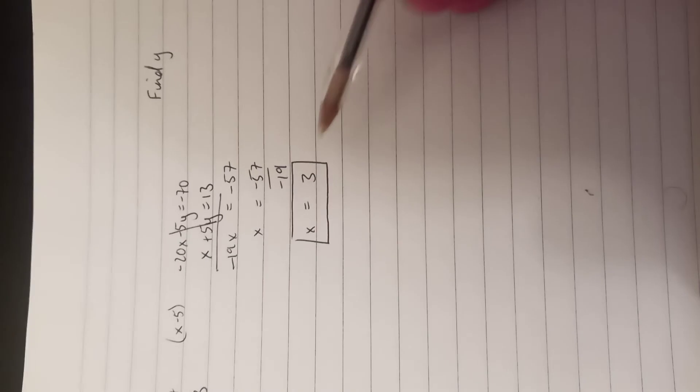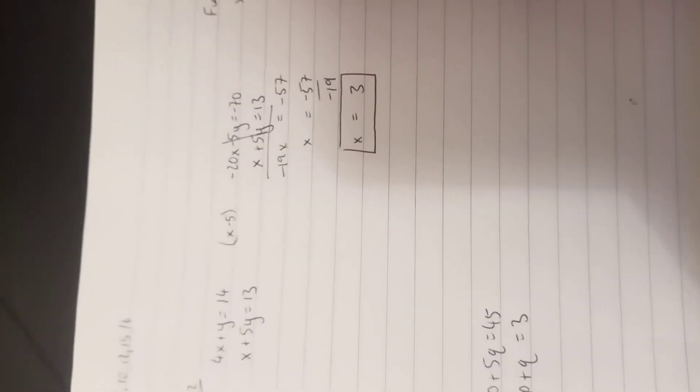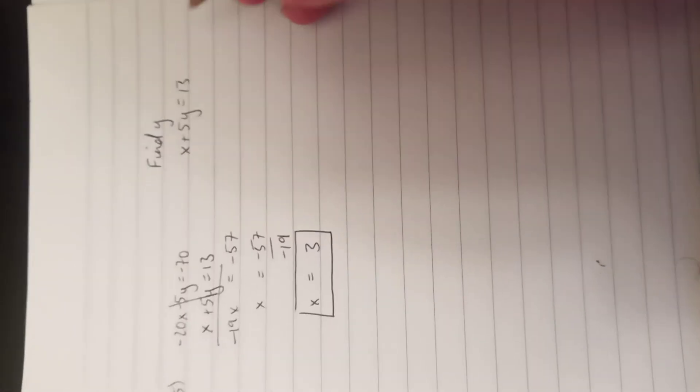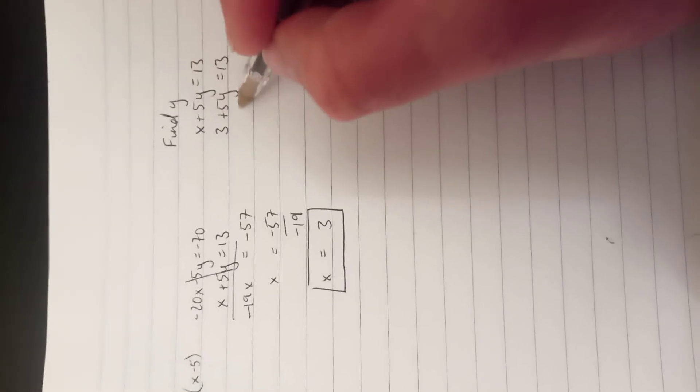Now to find y, I'm going to take the x value that I found and sub it into one of those equations. I'm going to take that one because I think it's a little bit easier. So if I write that down, sub in the x: x was 3, that's what we found there, plus 5y equals 13, and then solve for the y.